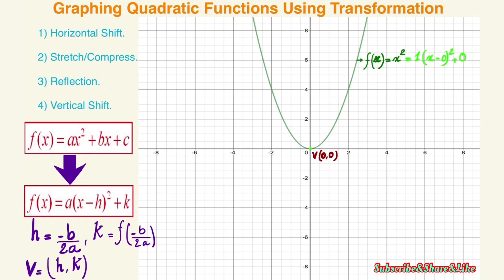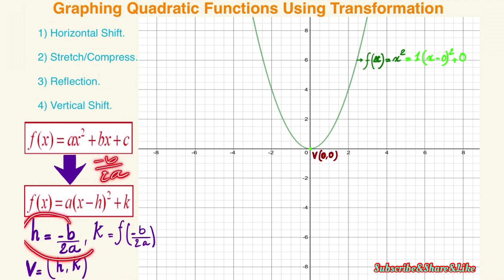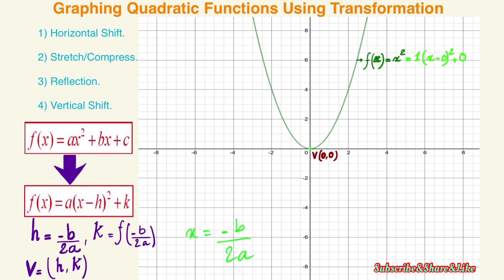We find the vertex by completing the square of this function, or by using h = -b / 2a. And k = f(-b / 2a). And x = -b / 2a is going to be the axis of symmetry of the parabola.